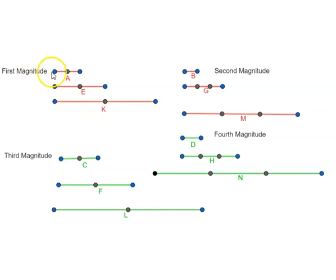if a first magnitude has to a second magnitude the same ratio as a third to a fourth, then any equimultiples whatever of the first and third also have the same ratio to any equimultiples whatever of the second and fourth respectively taken in corresponding order.